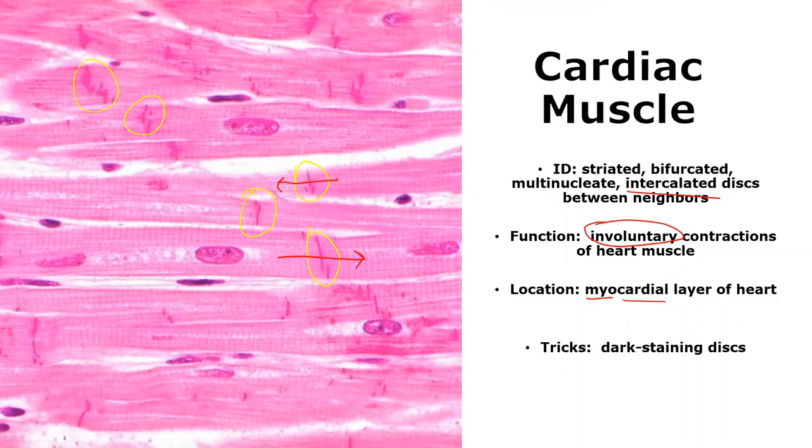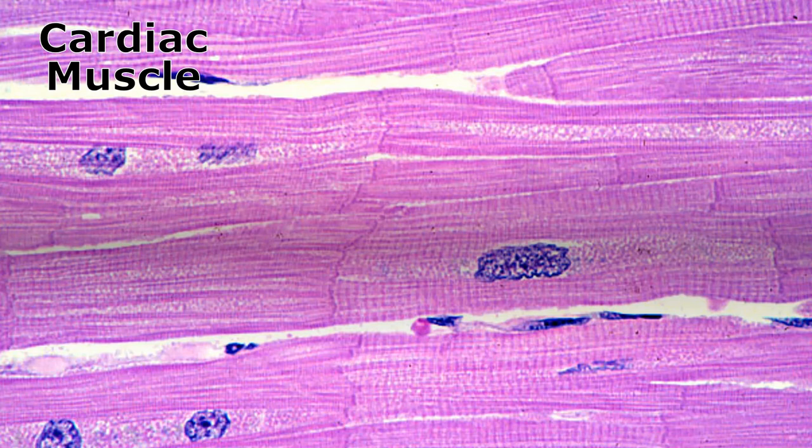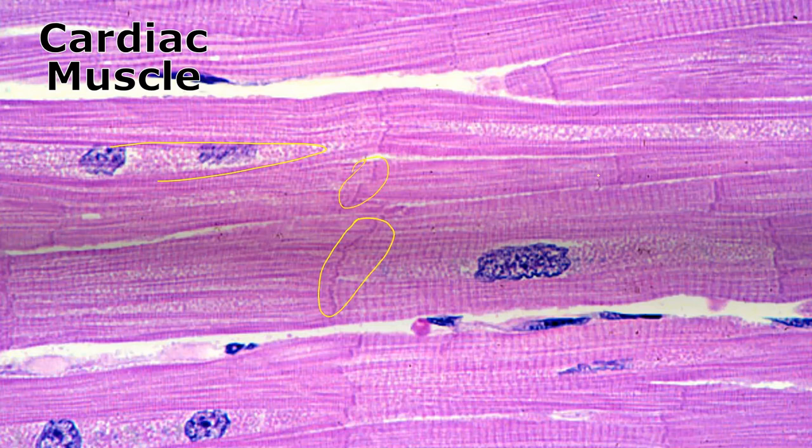Tricks: those dark staining intercalated discs that are in between the cells are an immediate giveaway that you are looking at cardiac muscle. Another beautiful picture of cardiac muscle. I can see the striations. I can sort of see a bifurcation. But I can see dark staining bands in between the cells. These are intercalated discs and to me that's the giveaway. Function: make the heart squeeze. Location: the myocardium of the heart.